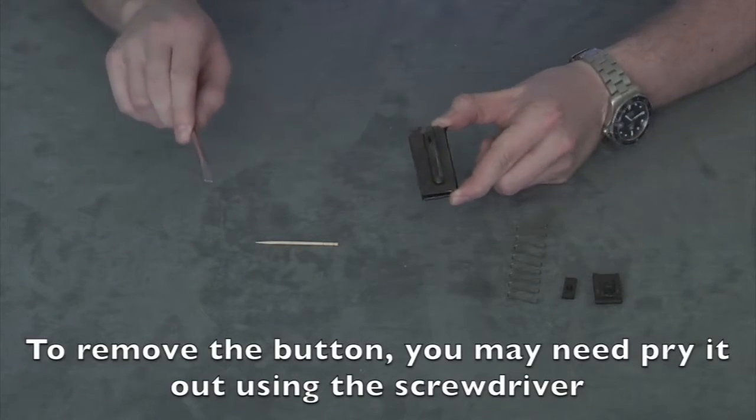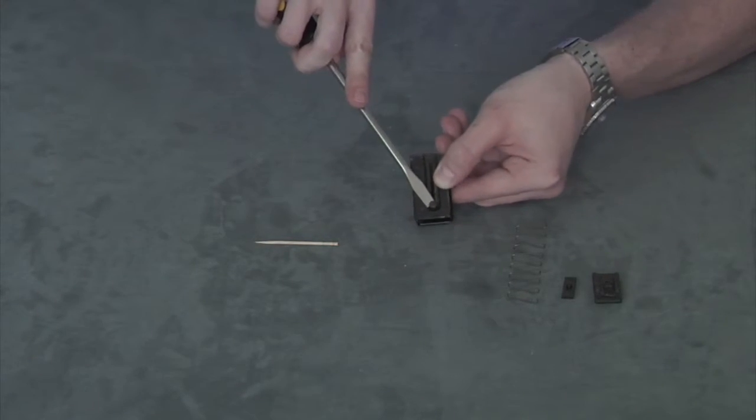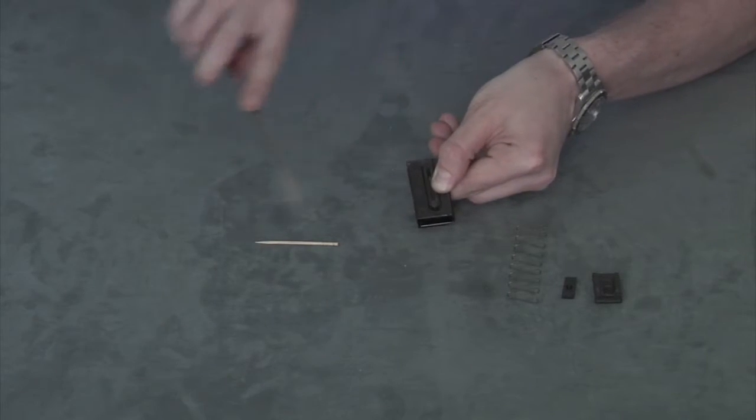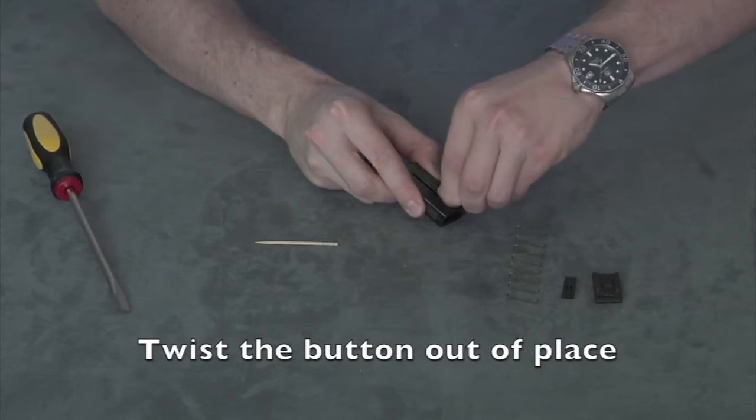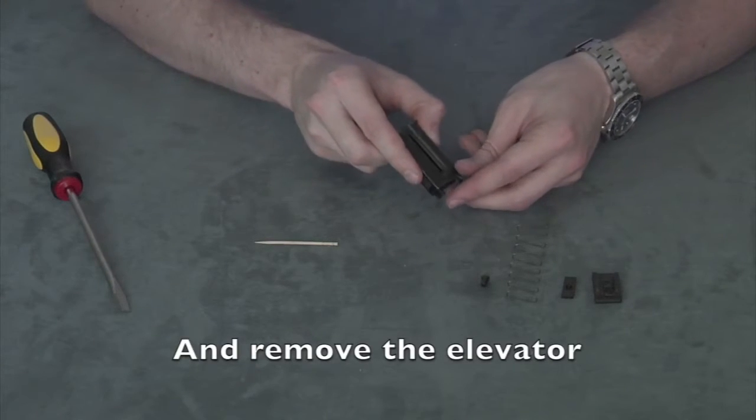To remove the button you may need to pry it out using a screwdriver. Twist the button out of place and remove the elevator.